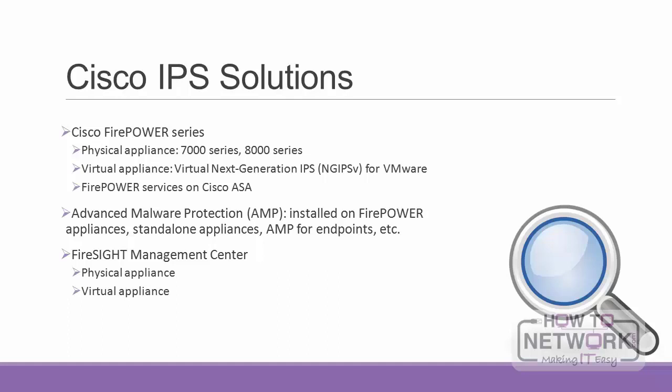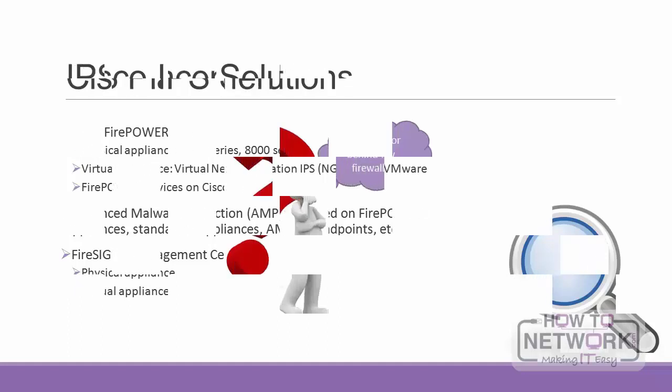Advanced Malware Protection can be deployed on any Cisco Firepower appliance but also has its own dedicated appliances including the AMP 7150, AMP 8150, and AMP 8390. The Cisco FireSIGHT Management Center provides centralized management for Firepower appliances and can come as physical hardware or a virtual appliance. The Cisco ASA 5500-X is a firewall that can include the Firepower service as an IPS service, or the IPS can be a standalone dedicated solution using the Firepower 7000 and 8000 series.